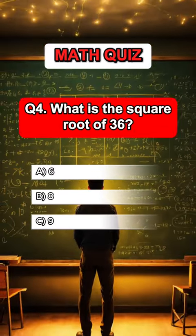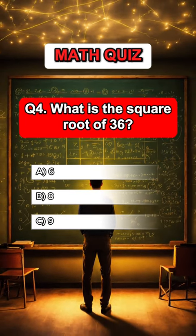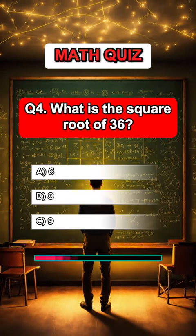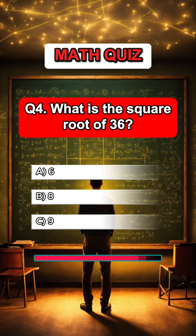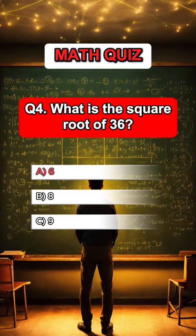Question 4. What is the square root of 36? Answer A, 6.